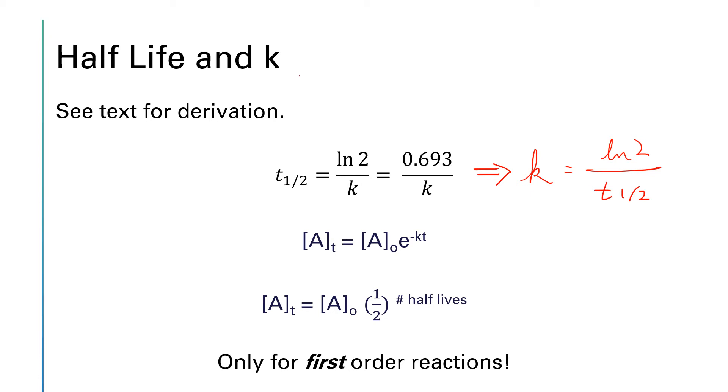Remember our main equation for the integrated rate law for first-order reaction is that the natural log of A sub t is equal to minus kt plus the natural log of A naught. And so that equation can be used in its regular integrated rate law form or it can be rearranged to give you this form.